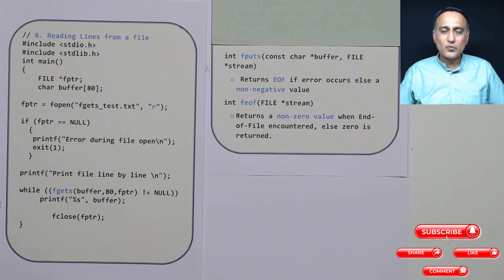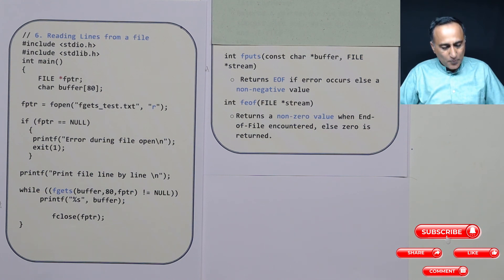So feof is a function where we use to check whether we have reached the end of the file. If we have not reached end of the file, it will return zero. But if we have reached end of the file, generally a non-zero value like minus one is returned. So I hope you have understood the basic idea of how to use sequential files in C.